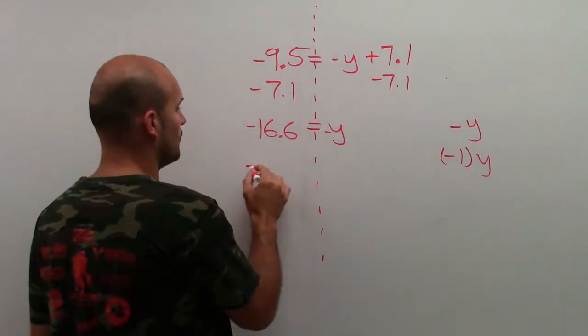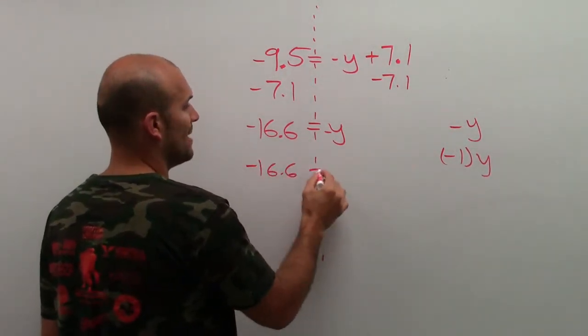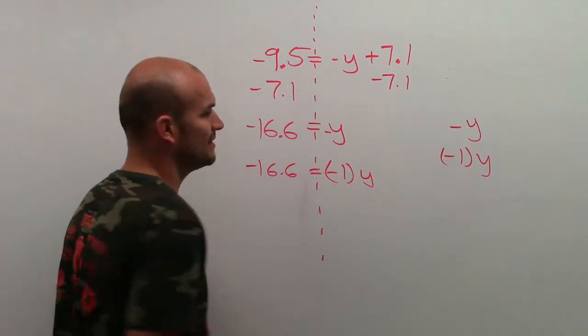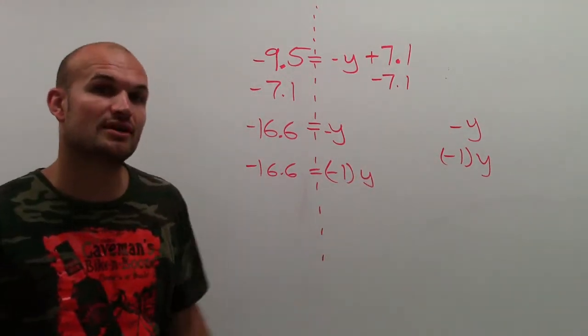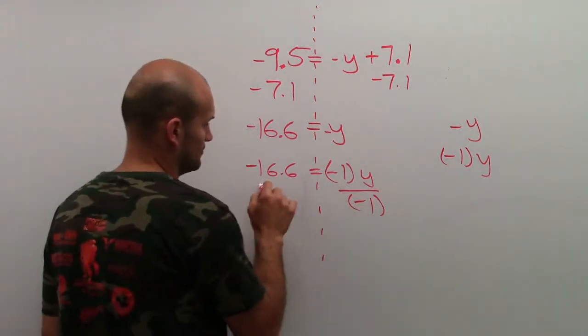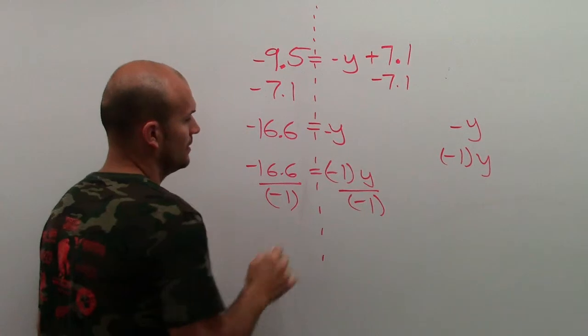So therefore, negative y is really just negative 1 times y. So to undo multiplication of negative 1, I need to divide by negative 1.